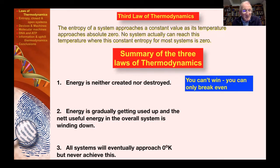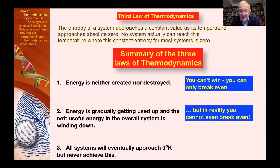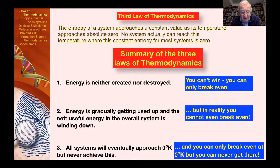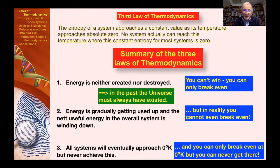To summarize these three laws: energy is neither created nor destroyed; energy is gradually getting used up and the net useful energy in the overall system is winding down; and all systems will eventually approach zero degrees Kelvin but never quite achieve this. You might deal with this colloquially: the first law says you can't win, you can only break even. But even then, in reality you cannot get to breaking even because to break even you'd have to go to zero degrees Kelvin and nobody can ever get there. You're really always losing out. You cannot beat the clock because of this direction that the second law is saying: things are winding down.